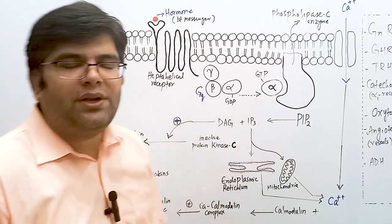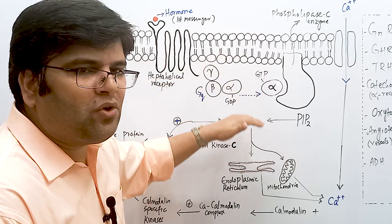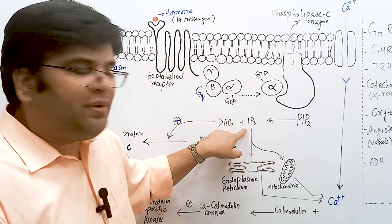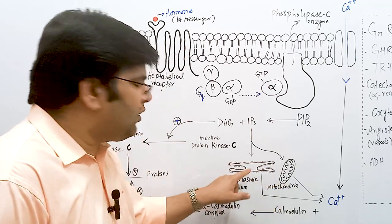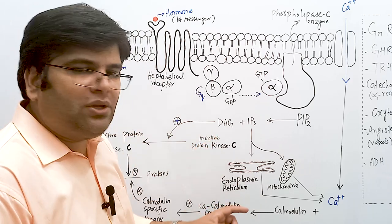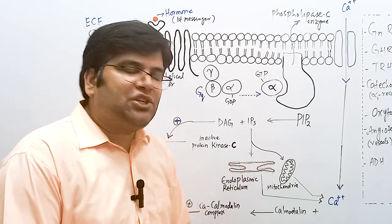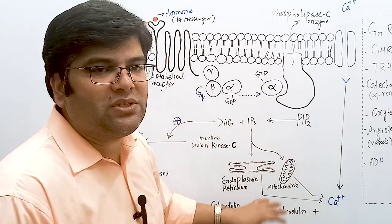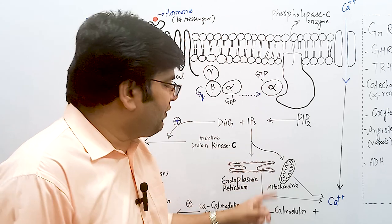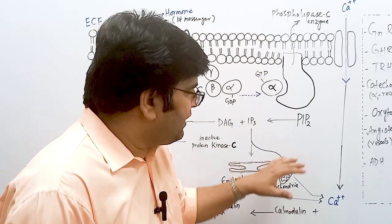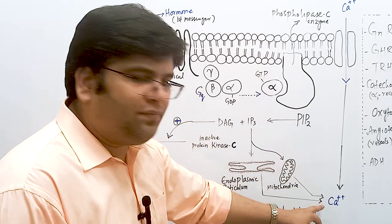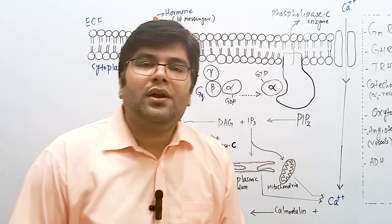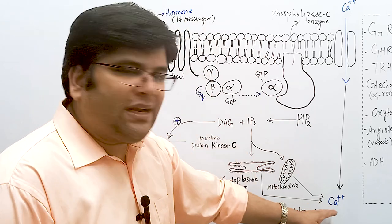IP3 (inositol triphosphate) is water soluble, so it moves into the cytoplasm, unlike DAG which remains in the cell membrane. IP3 acts on the membranes of mitochondria and endoplasmic reticulum, both of which store large amounts of calcium. Through IP3-gated calcium channels in these organelles, calcium is released. Normally, calcium concentration inside the cytoplasm is very low compared to outside; however, the released calcium raises intracellular calcium concentration more than 100 times. Calcium itself is also a second messenger.